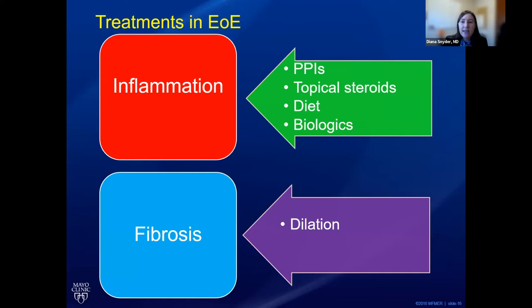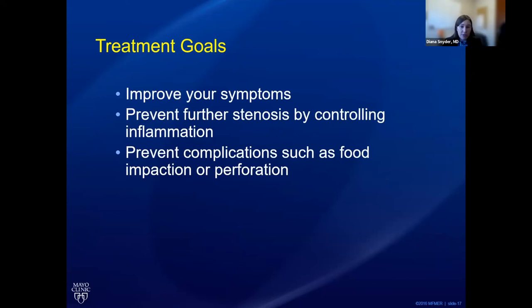Before talking about dilation specifically, here's a general overview of how we manage EOE. We like to treat EOE with medical therapy to reduce inflammation, and it's the scarring or fibrosis that we target with dilation — we use these therapies in combination. Our general treatment goals are to improve your symptoms, prevent further narrowing by controlling inflammation, and prevent complications. The number one reason for food impaction in the U.S. is EOE, so we want to get the esophagus open to prevent food impaction and prevent significant esophageal tears, called perforations.